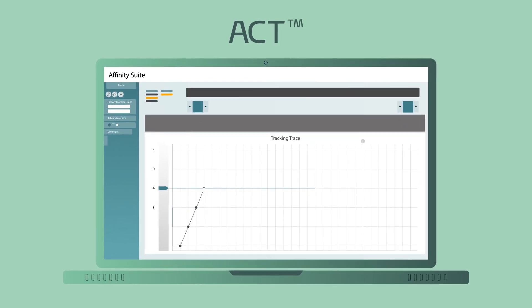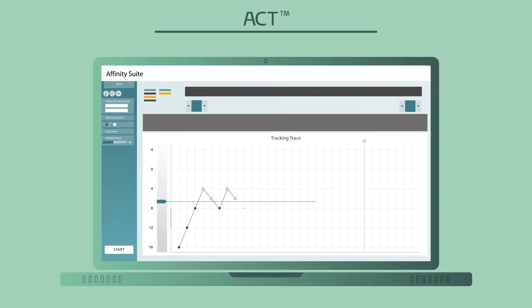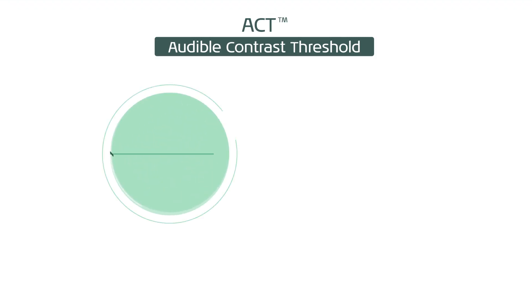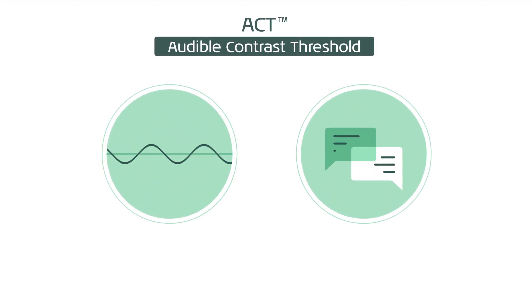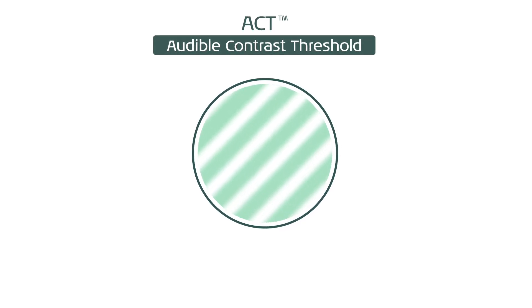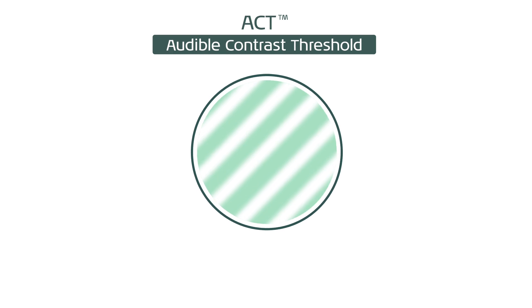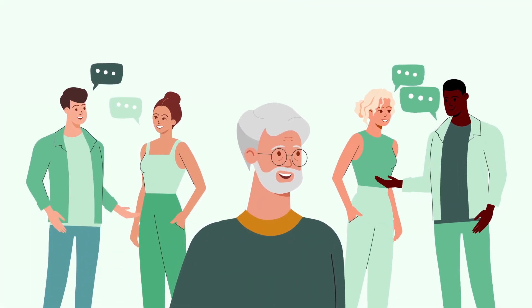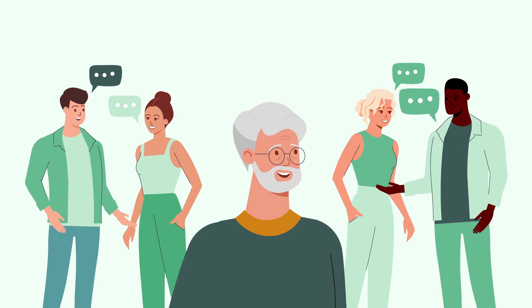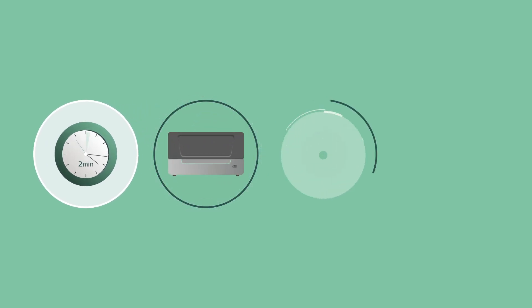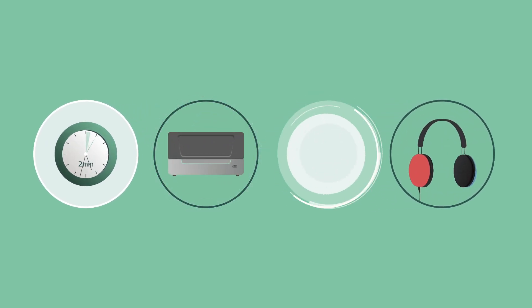ACT overcomes all of these challenges. ACT stands for Audible Contrast Threshold. ACT is not a tone test or a speech test. Instead, it uses modulated noise signals to define how much contrast a patient needs to hear the difference between two sounds. It measures the patient's real-life ability to hear in noise. ACT only takes two minutes to complete and uses the same equipment as pure-tone audiometry — a set of headphones or insert earphones and a push-button.